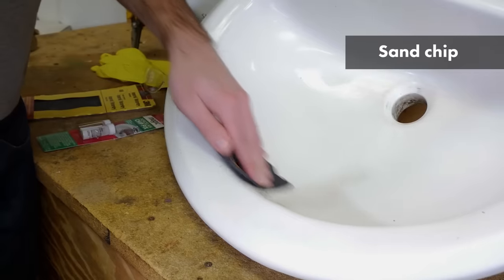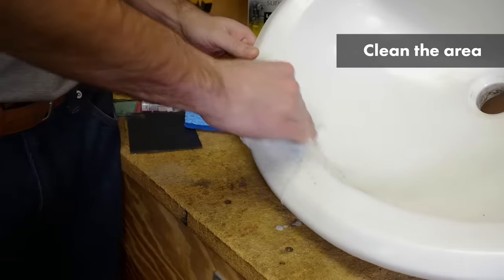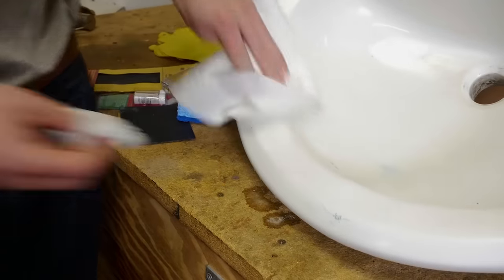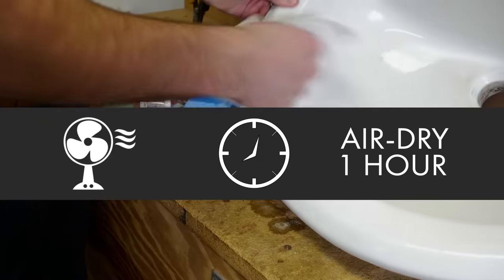Begin by sanding the chip to smooth the edges. Then, clean the area with an abrasive cleaner and scrubbing pad. Rinse thoroughly and dry with a paper towel. Allow it to air dry for at least one hour.